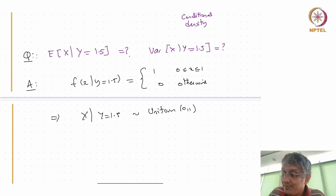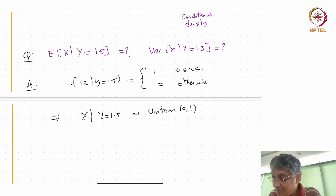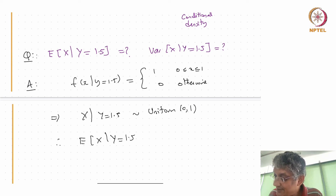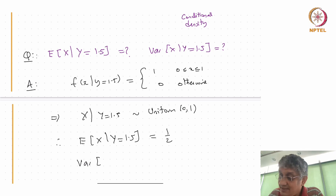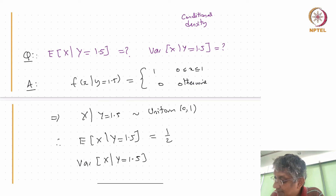This implies that X given Y = 1.5 is Uniform(0, 1). Therefore, the mean of X given Y = 1.5 is just 1/2. And the variance — we know it's (b − a)² / 12 — so the variance of X given Y = 1.5 is (1 − 0)² / 12 = 1/12.